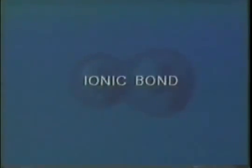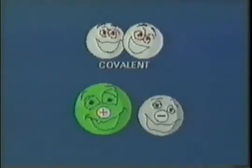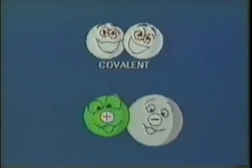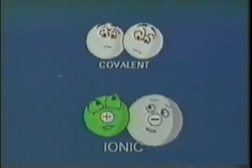It turns out that whenever two atoms form a chemical bond, they either share electrons by overlapping orbitals in a covalent bond, or trade electrons to form an ionic bond, or something somewhere in between.